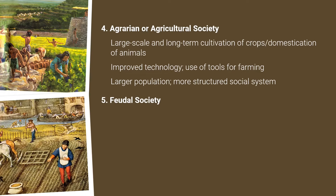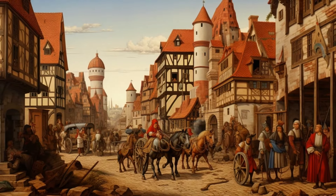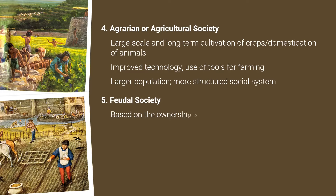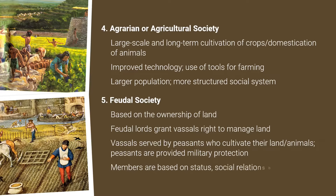The Feudal Society originated in Western Europe during medieval times. It is a form of society based on the ownership of land. Rulers, or feudal lords, grant their followers, or vassals, the right to manage parcels of their land. These vassals in turn are served by peasant workers who cultivate their land and animals. In return for the peasant services, they are provided military protection. Members of this form of society are based on status, while social relations are characterized by dependence.